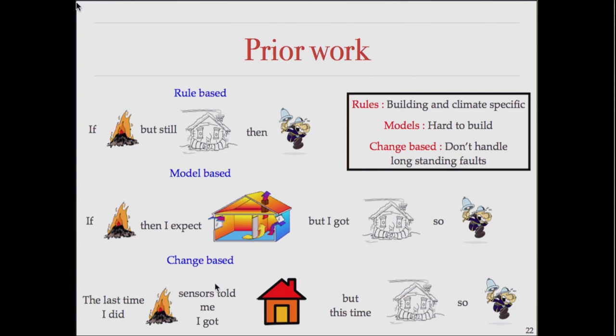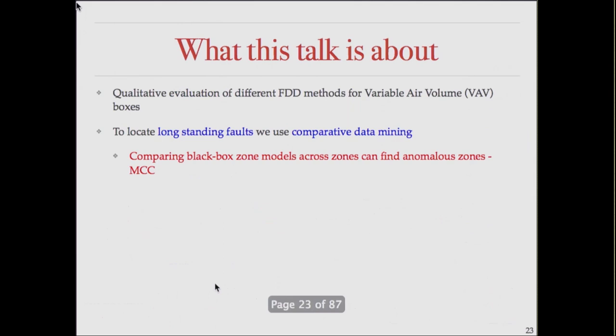What we want is to come up with a method that can fix some of these problems. This comparative data mining technique can find long-standing faults in our building testbed — and we actually find a fairly large number of them. The idea is that when we have a building with 237 zones, we can compare zones to each other. Even if you don't know what a fault is, you can tell that this zone is very different from others — so maybe there is a fault. This is largely and almost completely data-driven.